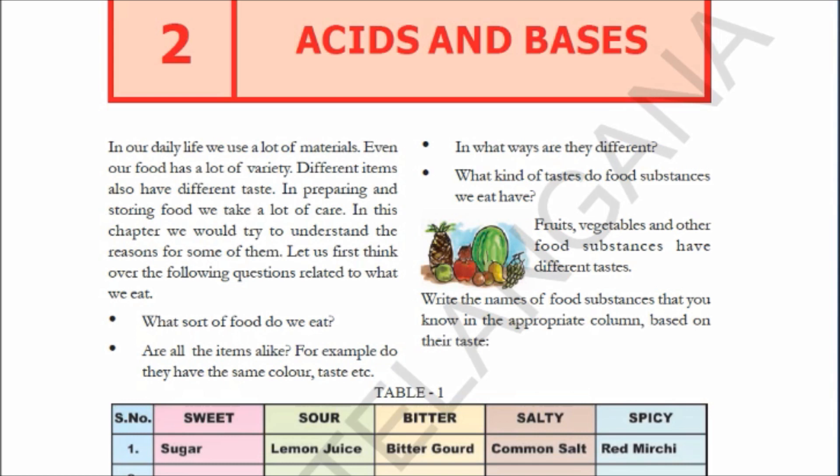What are the different tastes you experience? Sweet, sour, bitter, salty, or spicy. Give me some examples of food items which give a sour taste — lemon juice, orange, tamarind, raw apple. Give me some examples of food items which give a bitter taste — bitter gourd, baking soda, etc. These are the different tastes we know: sweet, sour, bitter, salty, and spicy.